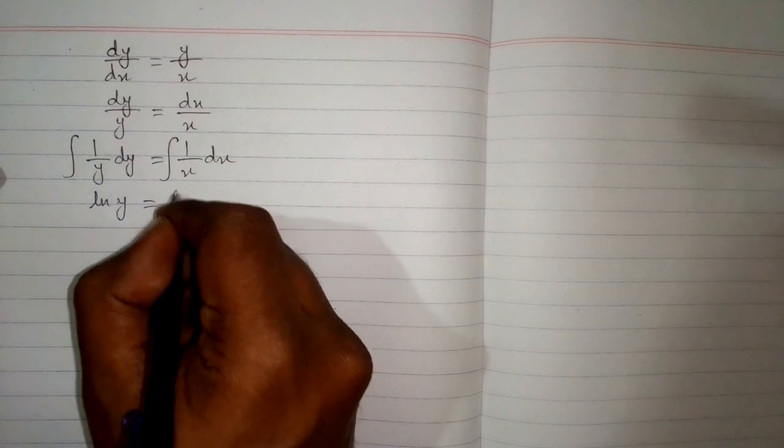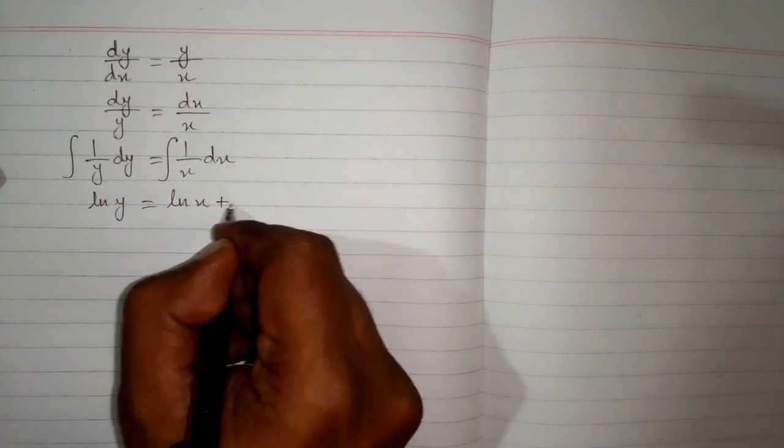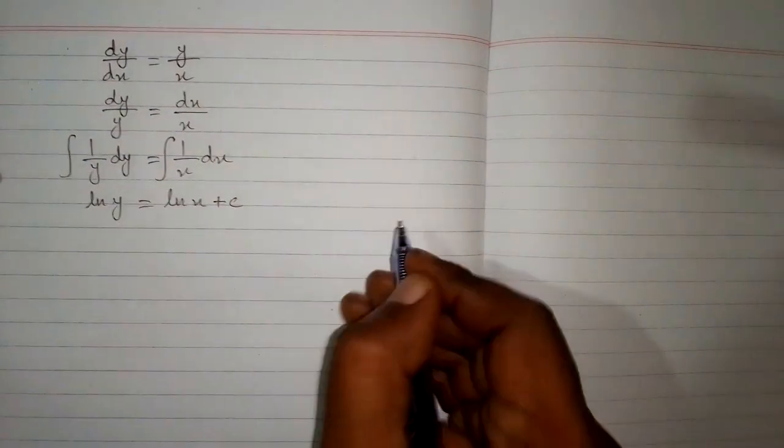So we have integral of 1 upon y which is equal to ln of y and the integral of 1 upon x is ln of x plus c where c is the constant of integration.